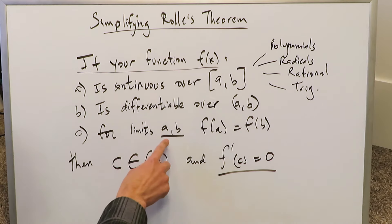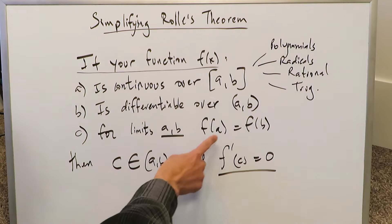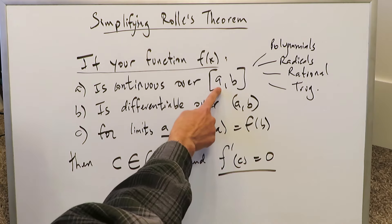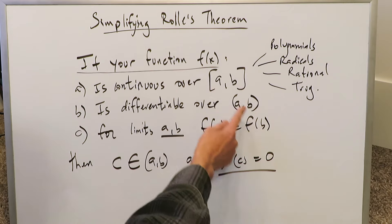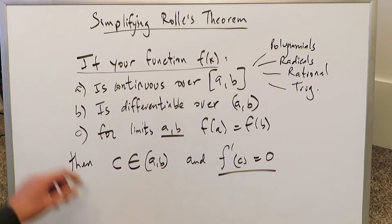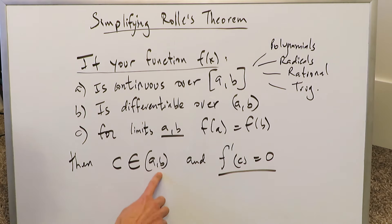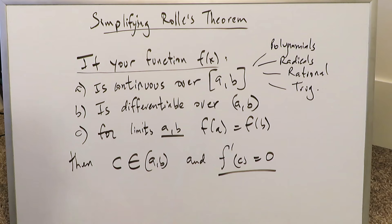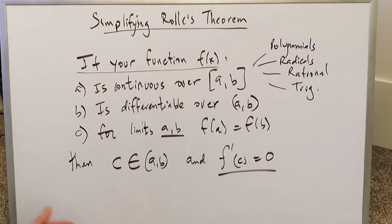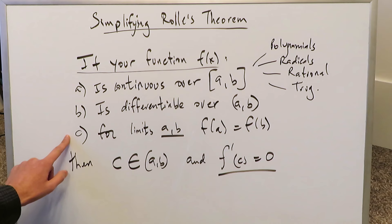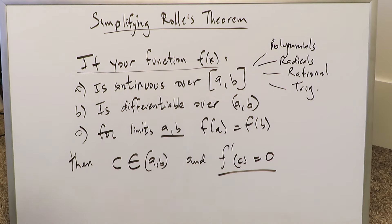In addition, for the interval limits a and b, you also need to show that f(a) is equal to f(b). If you plug in value a and value b into your function and both outputs are equal, then if conditions (a) through (c) are satisfied, there exists a number c within your interval such that you can generate a horizontal tangent line — meaning the derivative has a value equal to 0.